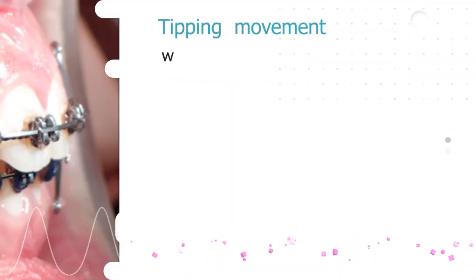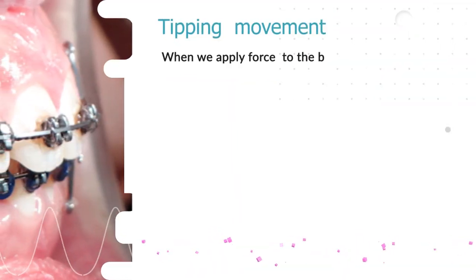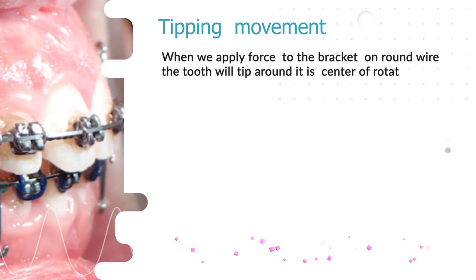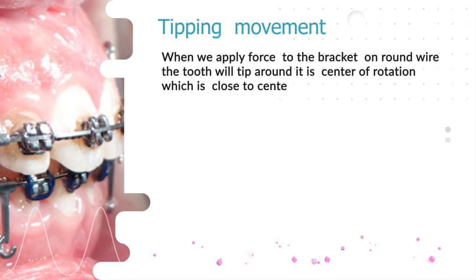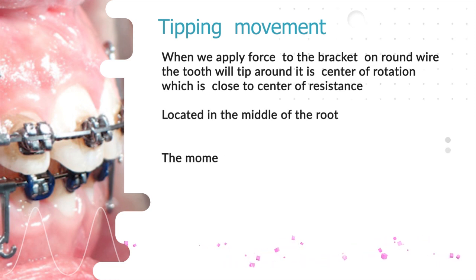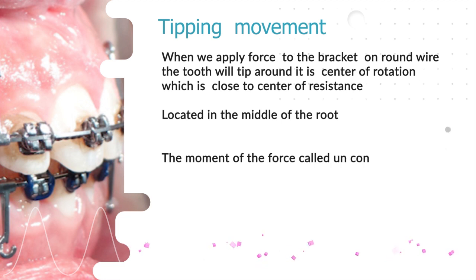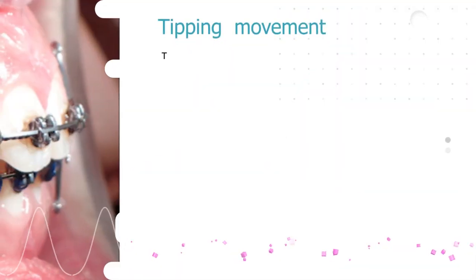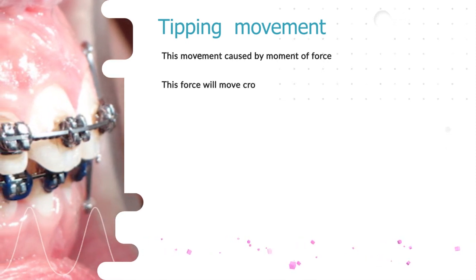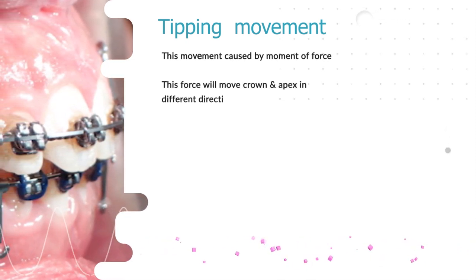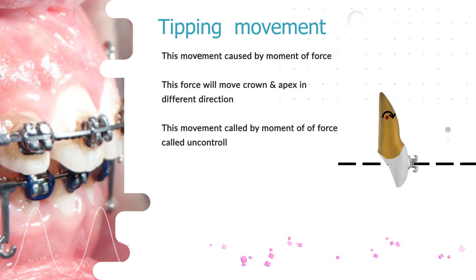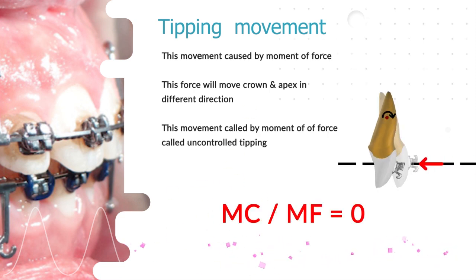How we apply this principle in different types of tooth movement. Tipping movement: when we apply a force to the bracket on a round wire, the tooth will tip around the center of rotation, which is close to the center of resistance, located in the middle of the root. This movement is called uncontrolled tipping. This force will move the crown and apex in different directions, and the moment of couple to moment of force ratio will be zero.